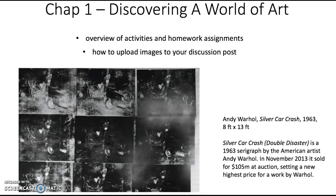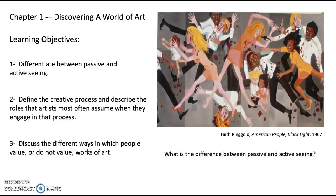The first learning objective is to differentiate between passive and active seeing. There's a lot of great information regarding how you can quickly look at something versus actually analyzing it and spending some time looking at it.